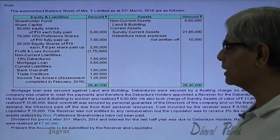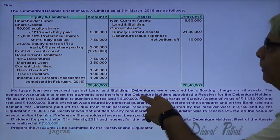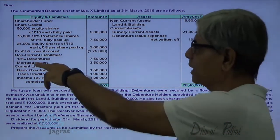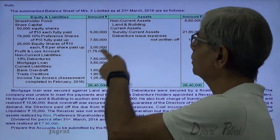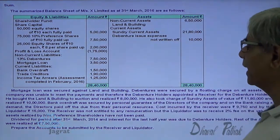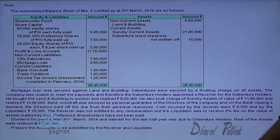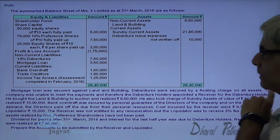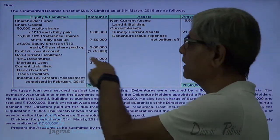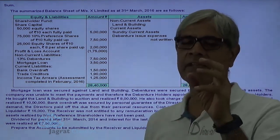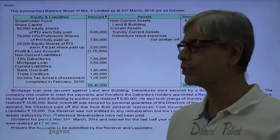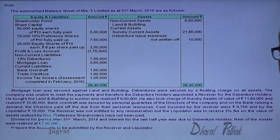The mortgage loan was secured on land and building. Debentures were secured by a floating charge over the assets, so the debenture holders were having a floating charge over the assets.